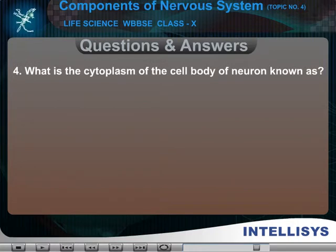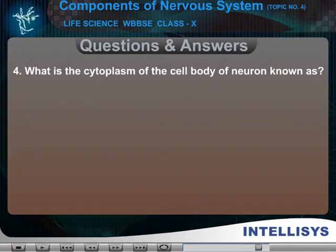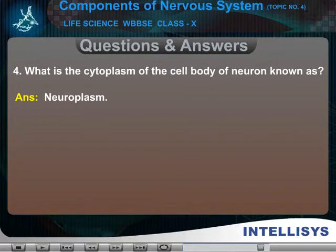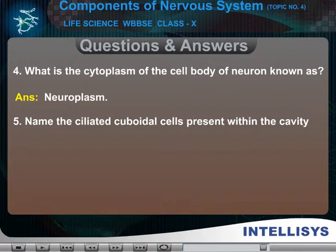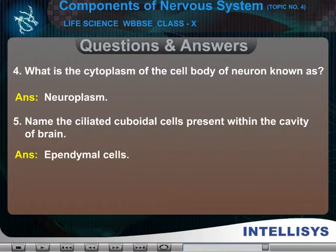4. What is the cytoplasm of the cell body of neuron known as? Answer: Neuroplasm. 5. Name the ciliated cuboidal cells present within the cavity of brain. Answer: Ependymal cells.